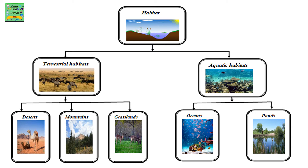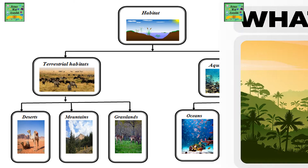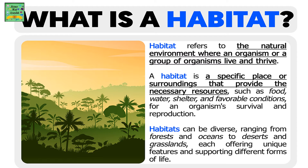Habitats are of two types: terrestrial habitats and aquatic habitats. Terrestrial habitats are divided into three types: deserts, mountains, and grasslands. Aquatic habitats include oceans and ponds. What is a habitat? A habitat refers to the natural environment where an organism or a group of organisms live and thrive.